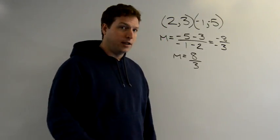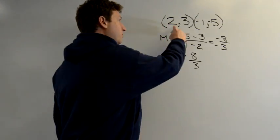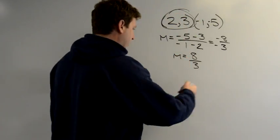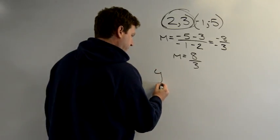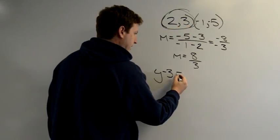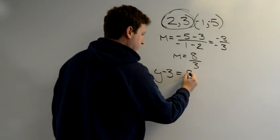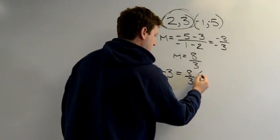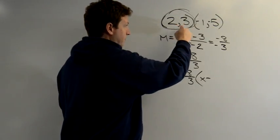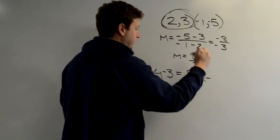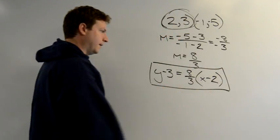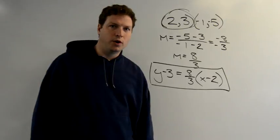Now I have two points but I only need one, so I'm going to use this one — all positive numbers, that's fine. I'm going to put this into point-slope form: Y minus Y1 equals my slope times X minus X1. I must use this same point — since I use this Y, I must use this X minus 2. There it is: your point-slope form.